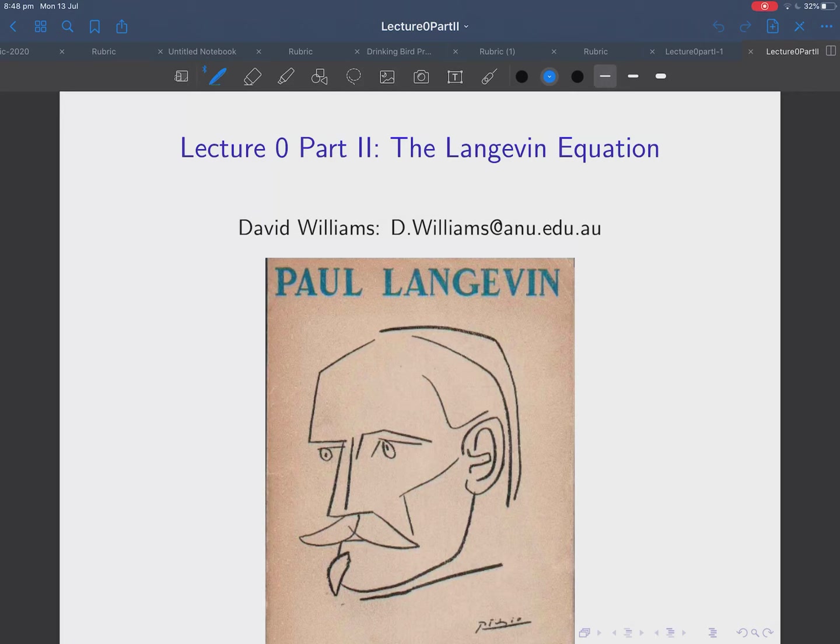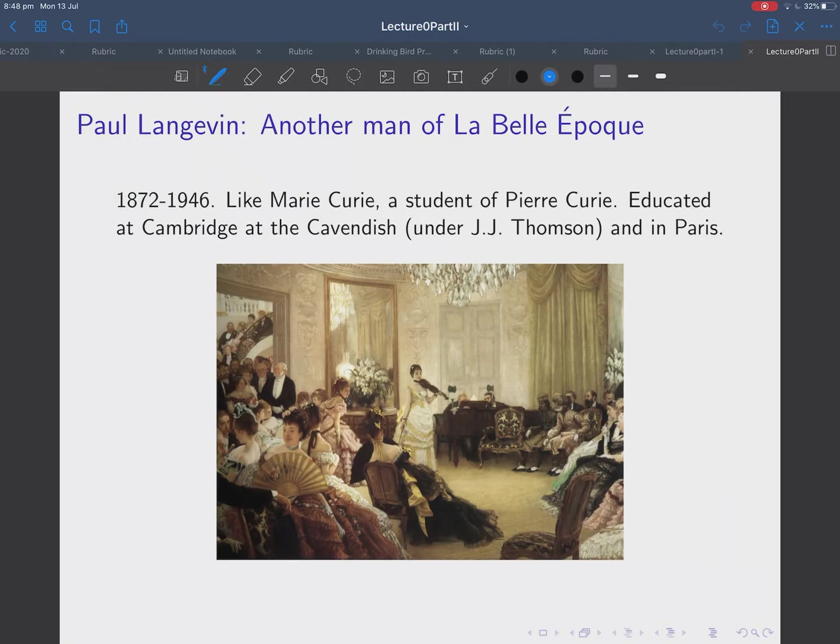Okay, so there's Paul Langevin, after whom the Langevin equation is named. That's a drawing by Picasso. All right, so Paul Langevin was born in 1872, and he lived until 1946.